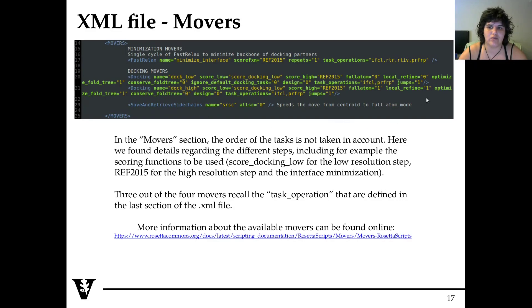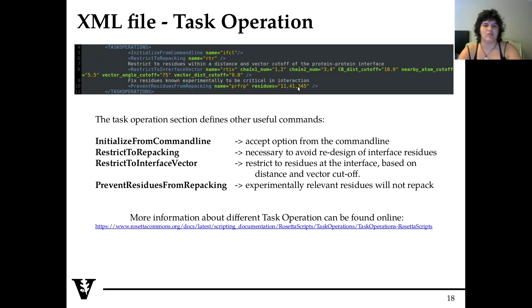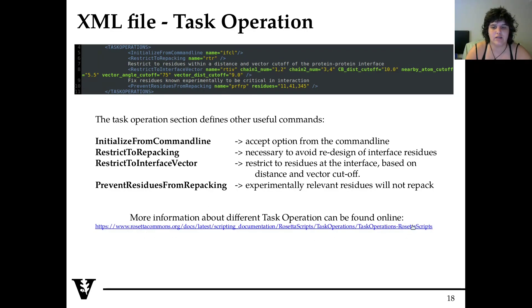The next thing to mention is the task operation, called here from the mover. This is the first section described in the XML file. These are useful to define things for certain portions of the protein — for example, the 'prevent residues from repacking' task operation allows you to define specific residues that should not repack. For the task operations as well, you can go online to Rosetta Commons, task operation, RosettaScripts.